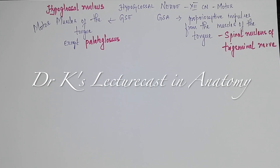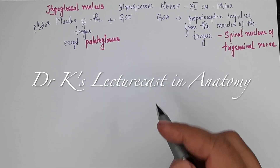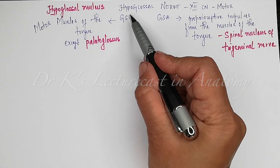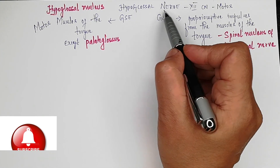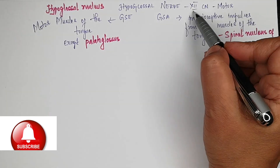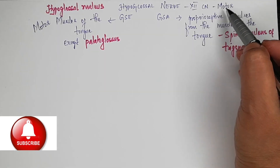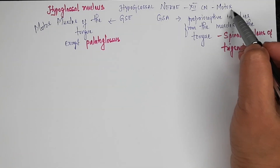Welcome to Dr. K's lecture cast in anatomy. Today we are going to discuss about the hypoglossal nerve. It is the 12th cranial nerve and it is purely motor.